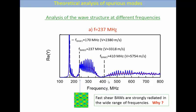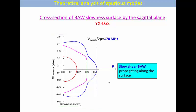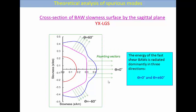Let's return to the fast shear bulk wave which is strongly radiated in wide range of frequencies. We will try to answer why it happens. We should look at the cross-section of the slowness surface for bulk waves by the sagittal plane of our material. From this plot we can estimate easily our cutoff frequencies for slow shear, fast shear, and longitudinal bulk waves which agree with the admittance plot. For arbitrary angle theta we can find Poynting vector directional, which is always normal to the slowness surface.